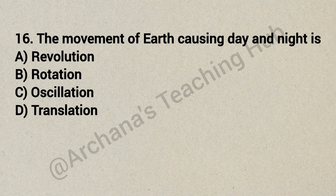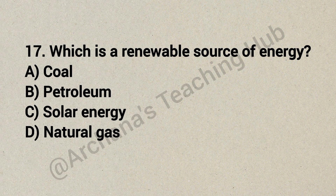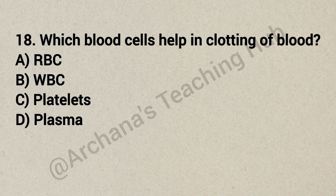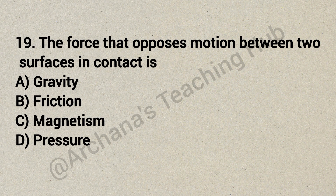Question 16: The movement of Earth causing day and night is — Option A: revolution, Option B: rotation, Option C: oscillation, Option D: translation. Correct answer is Option B: rotation. Question 17: Which is a natural source of renewable energy? Option A: coal, Option B: petroleum, Option C: solar energy, Option D: natural gas. Correct answer is Option C: solar energy. Question 18: Which blood cells help in clotting of blood? Option A: RBC, Option B: WBC, Option C: platelets, Option D: plasma. Correct answer is Option C: platelets.